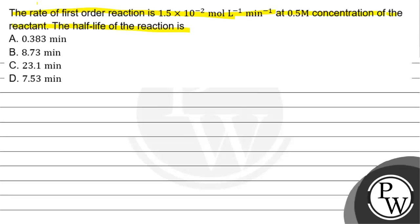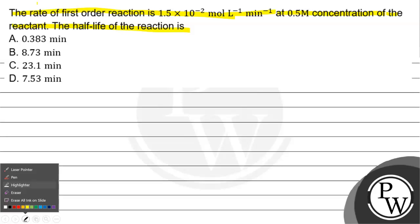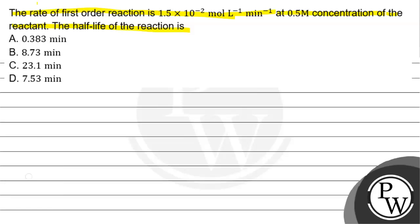The half life of the reaction is: option A has 0.383 minute, option B has 8.73 minute, option C has 23.1 minute, option D has 7.53 minute.